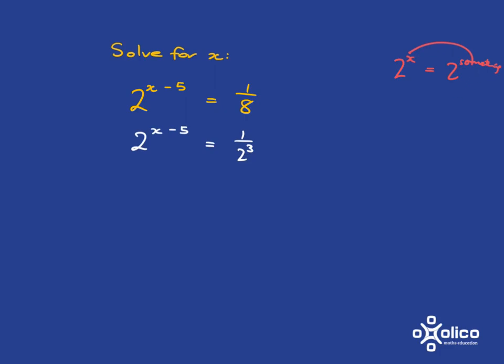What I want is to have a plain old 2 on this side. But I know that 1 over 2 cubed is 2 to the negative 3. And, of course, then it's very simple.